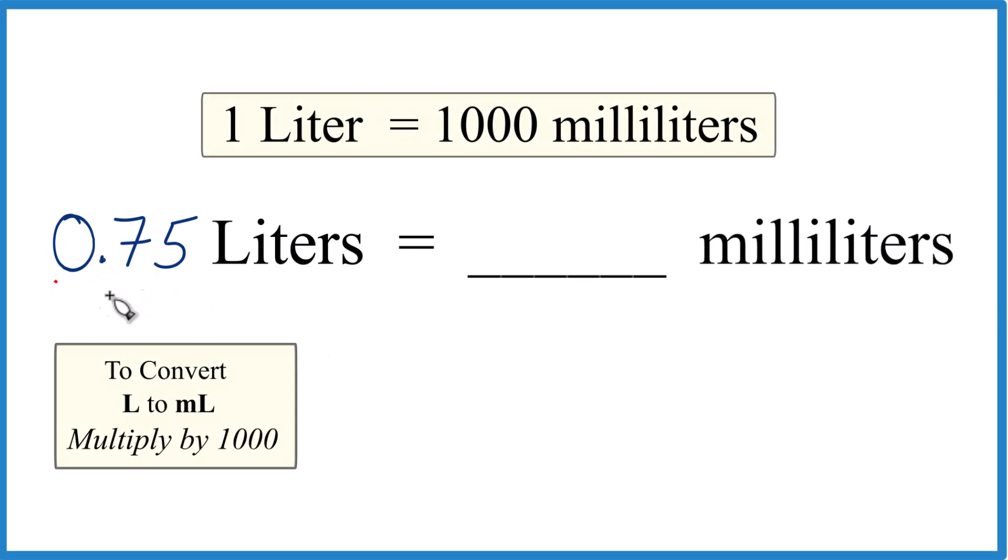If you need to convert 0.75 liters to milliliters, here's how you could do that. First off, you need to know that one liter is equal to a thousand milliliters. That's our conversion factor.